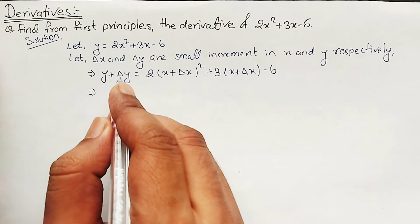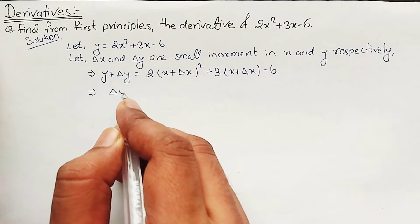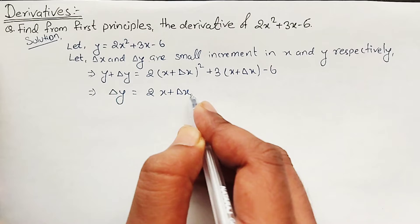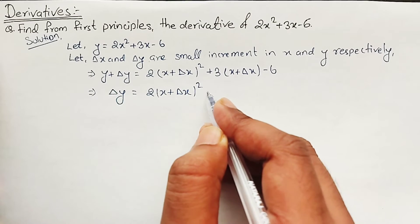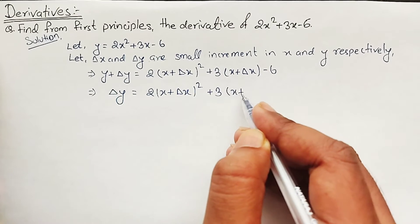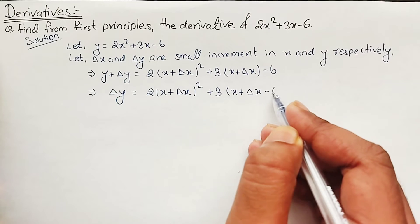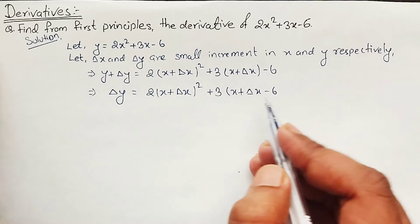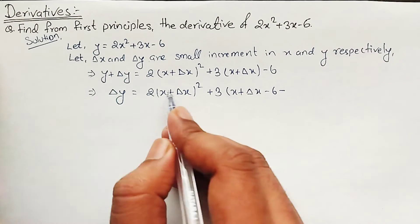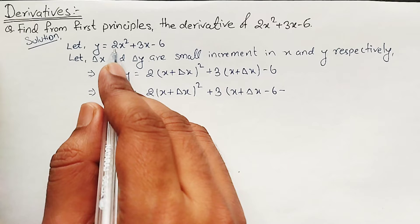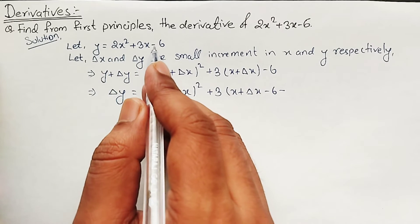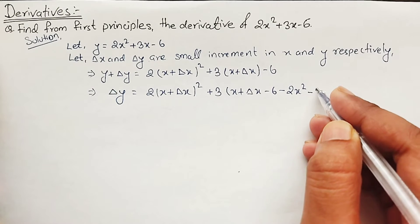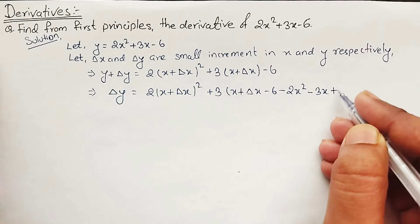We keep Delta Y on this side and bring Y to the other side. So: Delta Y equals 2(x plus Delta X) squared plus 3(x plus Delta X) minus 6, minus y. Since y equals 2x squared plus 3x minus 6, substituting gives: minus 2x squared minus 3x plus 6.